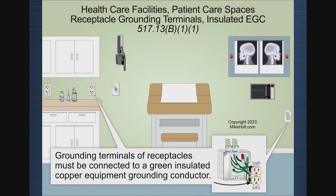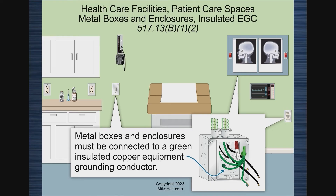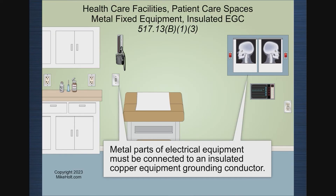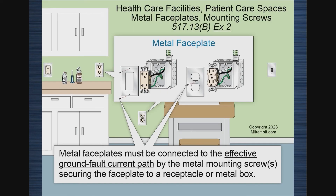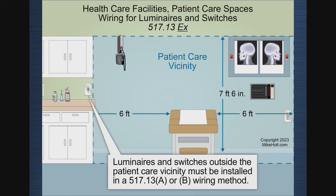So we need the receptacle connected to an insulated equipment grounding conductor, the box connected to an insulated equipment grounding conductor, and metal parts of equipment — like cover plates — connected to an equipment grounding conductor. The way you can accomplish that for cover plates is simply by using metal screws to mount them, which is an exception — you don't have to do it directly with a wire.